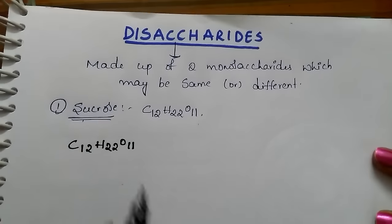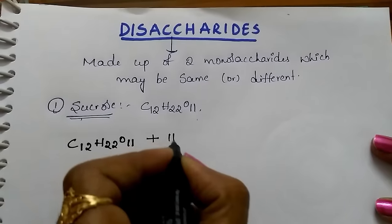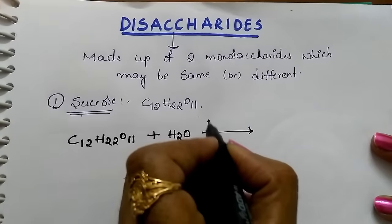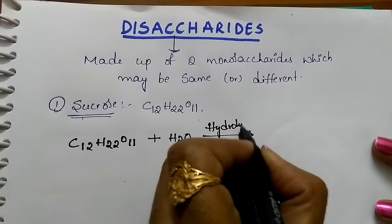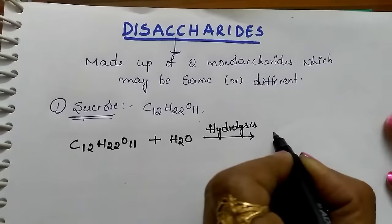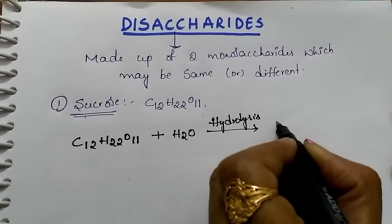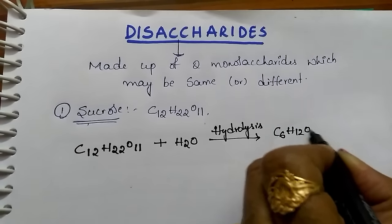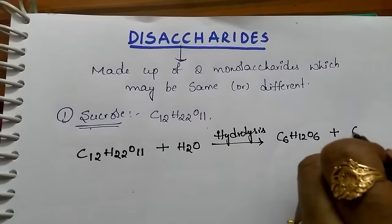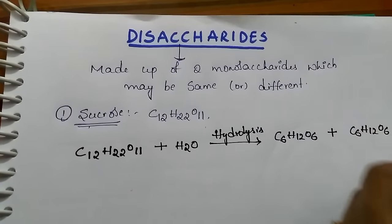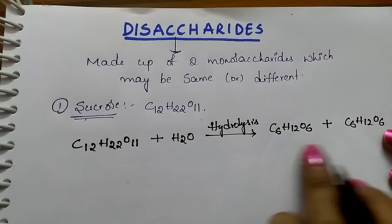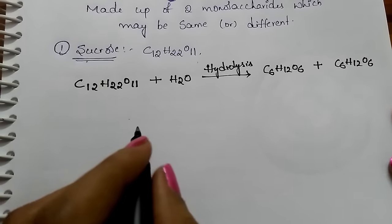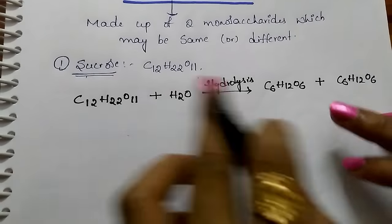Sucrose upon hydrolysis with mineral acids or enzymes gives two monosaccharide units. One is glucose and another one is fructose, both having molecular formula C6H12O6. Both glucose and fructose have the same molecular formula but different structures.